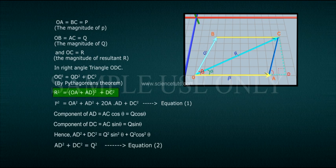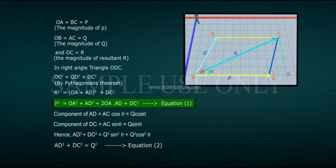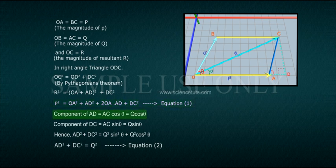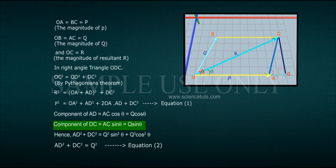In right-angled triangle ODC, by Pythagoras' theorem: R squared equals (OA plus AD) squared plus DC squared, which expands to OA squared plus 2·OA·AD plus AD squared plus DC squared. The component AD equals AC·cos theta equals Q·cos theta, and the component DC equals AC·sin theta equals Q·sin theta.